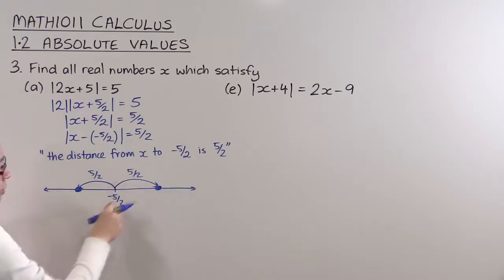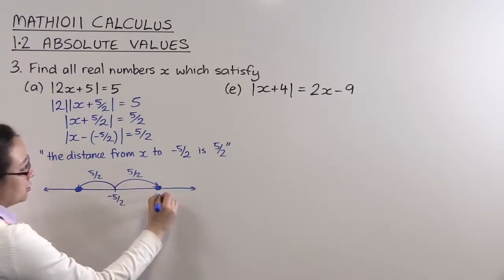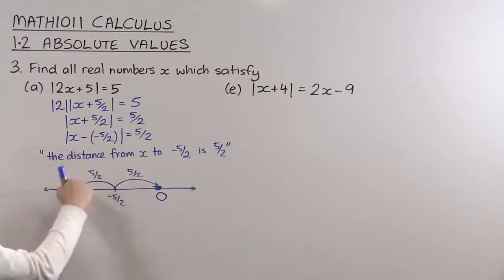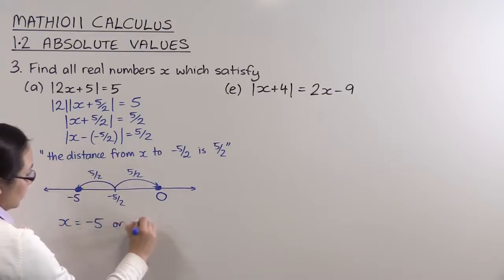5/2 away from minus 5/2 in that direction gives us 0. 5/2 away in that direction gives us minus 5. If you like, think about 5/2 - that's 2 and a half there. So that means our solution is x is minus 5, or x is equal to 0.